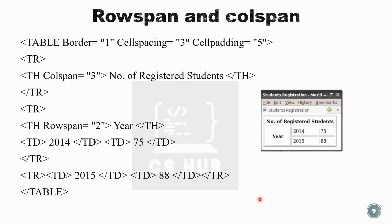Creating a table is actually very easy. Just identify your rows, then check whether the content is a heading or data, and check for any colspan or rowspan requirements — then use the appropriate td, tr, and th tags accordingly.